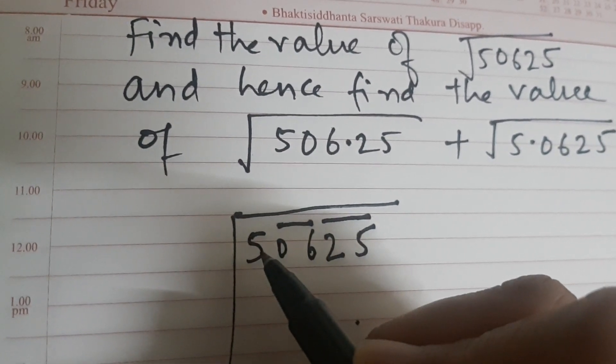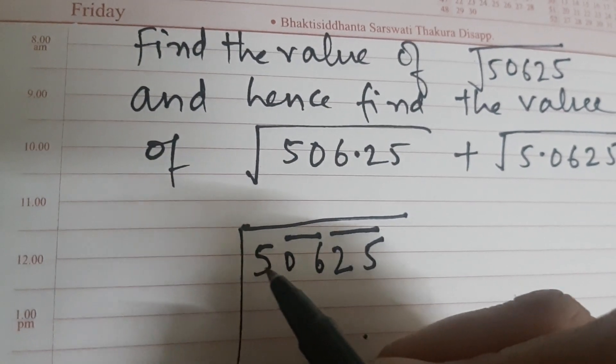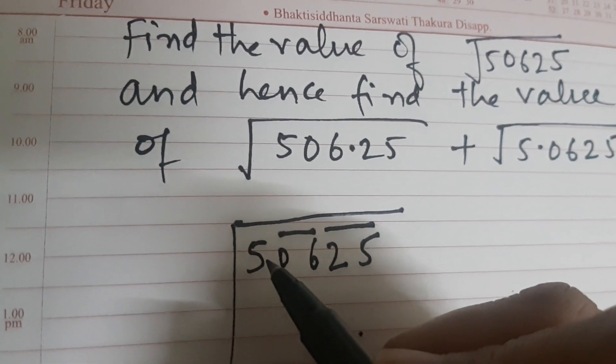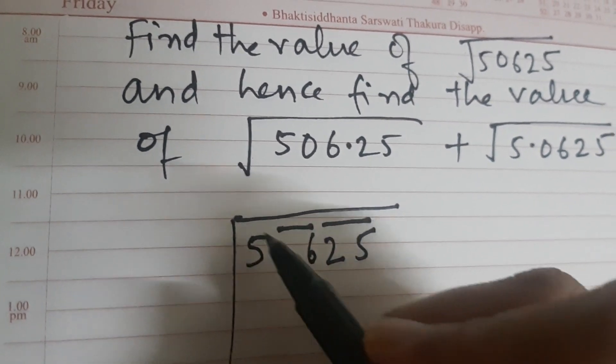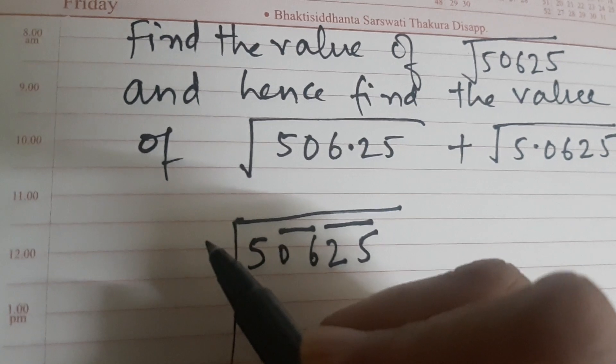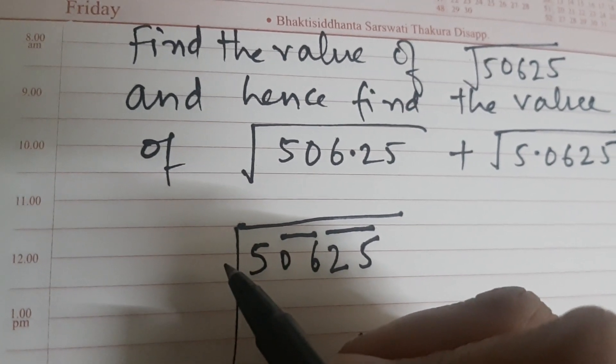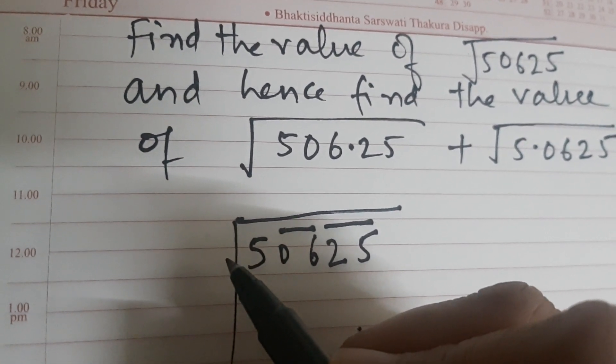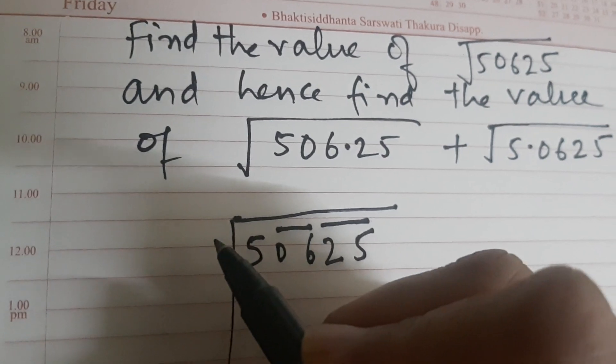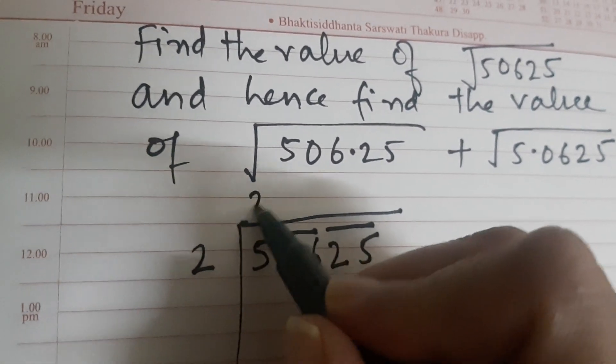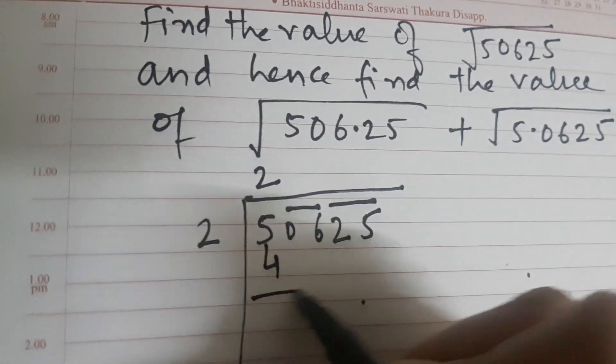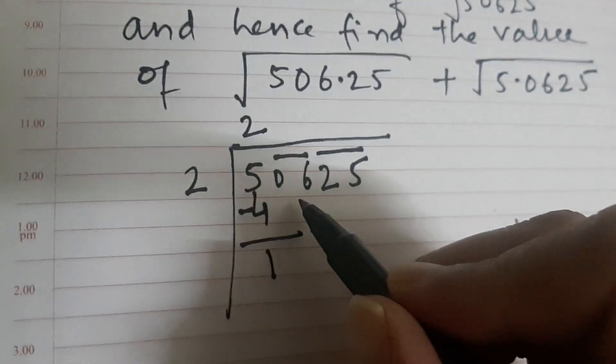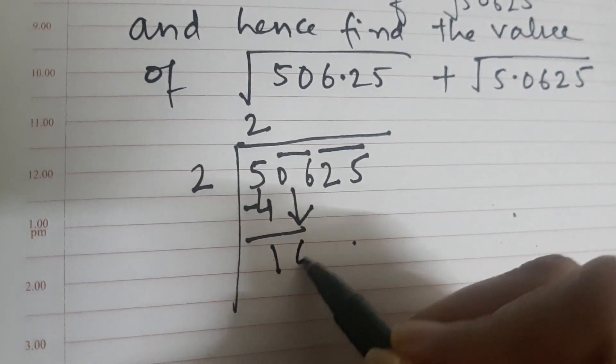Now here we are left with single digit 5, so we will look for a number whose square is less than or equal to this number. So 1 square is 1, 2 square is 4, 3 square is 9, so we will come back to 2 square. So 2 into 2 is 4, 5 minus 4 is 1.